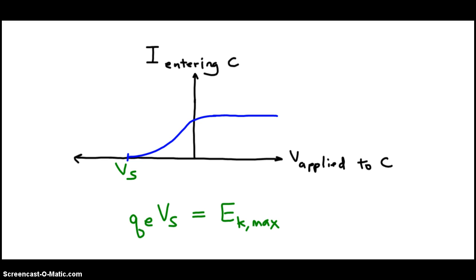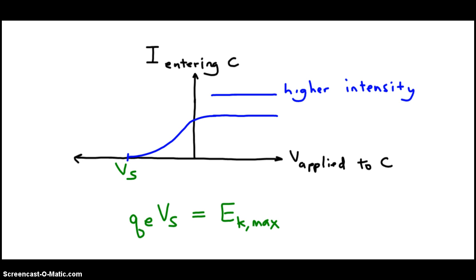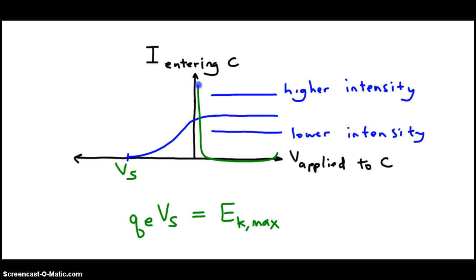Remember, the photocurrent is what we see when we look at the right half of the graph. The higher the photocurrent, the higher the line will be on the right side. So this represents higher intensity light. If the intensity is lower, then the line levels off at a lower value. So changing the intensity of light impacts the photocurrent and affects the right half of this graph.